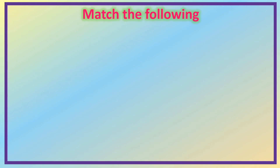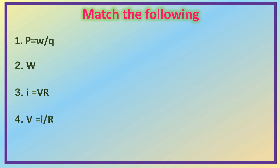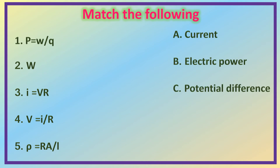Here is another very interesting matching. Match the following. First: P = W/Q. Second: W. Third: I = V/R. Fourth: V = IR. Fifth: ρ = RA/L. The options are — A: Current, B: Electric Power, C: Potential Difference, D: Specific Resistance, E: Work.